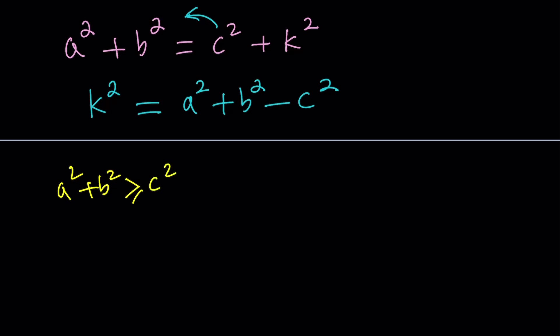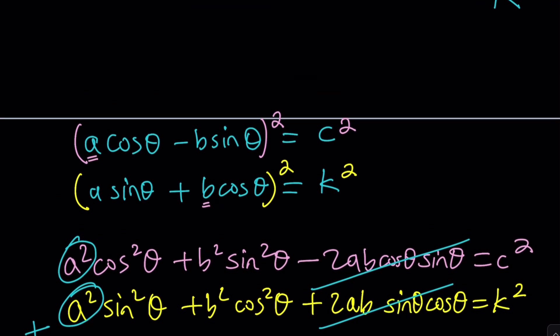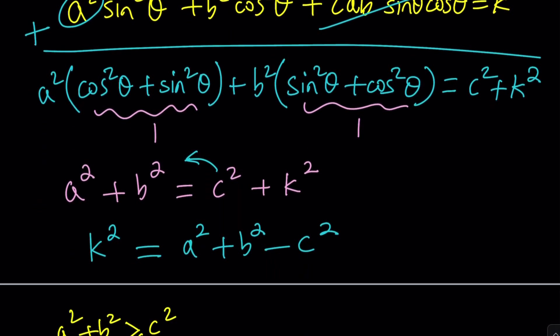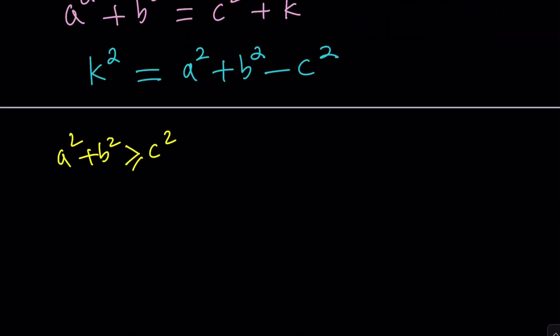Now, what happens if k is equal to zero? Let's consider that. That means a sine theta is equal to b cosine theta. And then from there, we can kind of find tangent theta numerically, so on and so forth. Anyways, let's go ahead and solve for k from here. Remember, if k squared is positive or non-negative, k is going to be plus minus the square root of a squared plus b squared minus c squared.